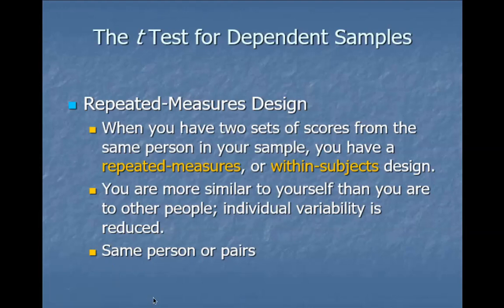But I want to highlight that if I'm looking at couples and want to know if husbands have better ratings of their marriage than wives, it wouldn't make sense to measure a bunch of random husbands and then a separate random group of wives. What I should do is take a husband, ask his opinion, and then take his wife and ask her opinion and see if there's a difference between the two.